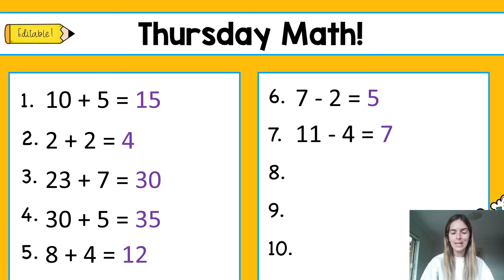Question 7 was 11 take away 4. So again, let's put 11 in our head and count back 4: 11, 10, 9, 8, 7, and we landed on 7. Question 8 was 19 take away 5 equals 14. So again, put that bigger number in our head, 19, and we're going to count back 5: 19, 18, 17, 16, 15, and 14.